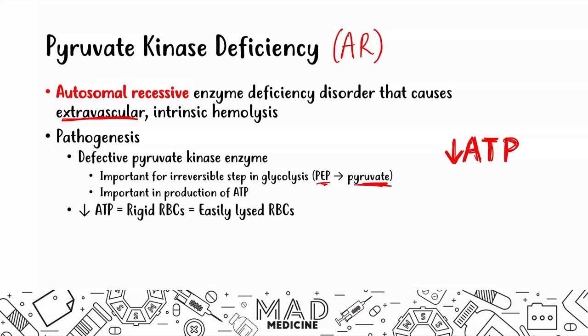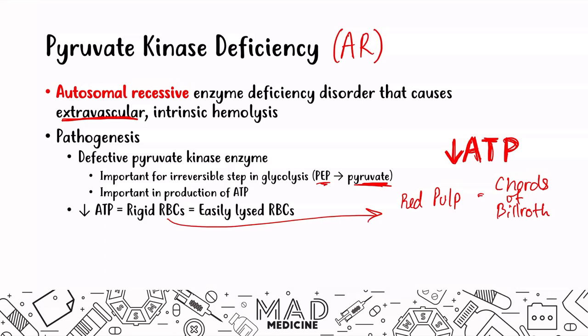Red blood cells normally are not rigid and shouldn't be rigid, because when they go through the red pulp they have to deform in order to go through a structure called the cords of Bilroth. This rigidity is not good for the red pulp. The cords of Bilroth act as a sieve — normal red blood cells can deform and change their conformation to pass through, but in pyruvate kinase deficiency they cannot because they are so rigid. They get stuck in the cords of Bilroth, and splenic macrophages destroy them. That is why you see extravascular hemolysis due to an intrinsic cause.